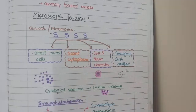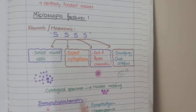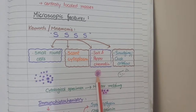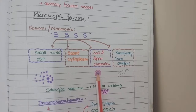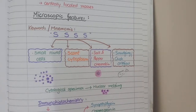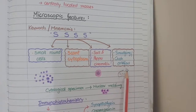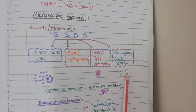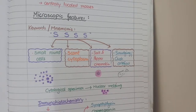The fourth S indicates smudging, which means some tumor cells show a broken or crushed appearance. This crushed appearance occurs because tumor cells in small cell carcinoma are small and fragile, and during preparation of the slide some of them burst. This finding is known as crushed artifact.